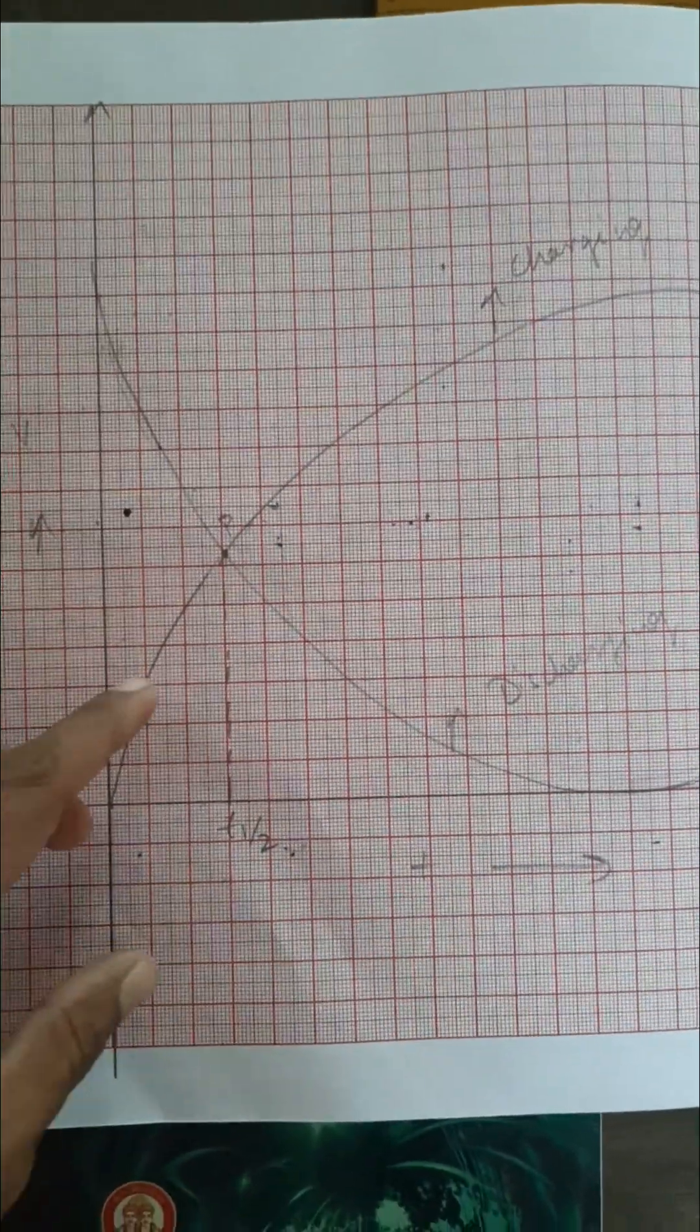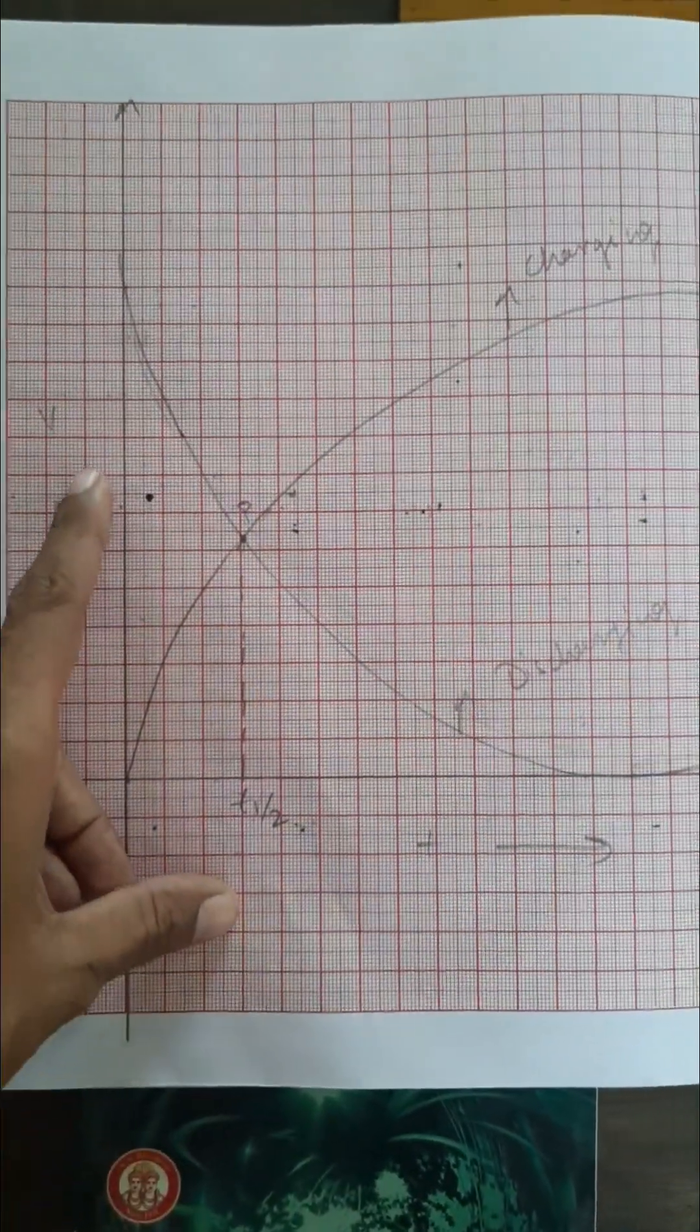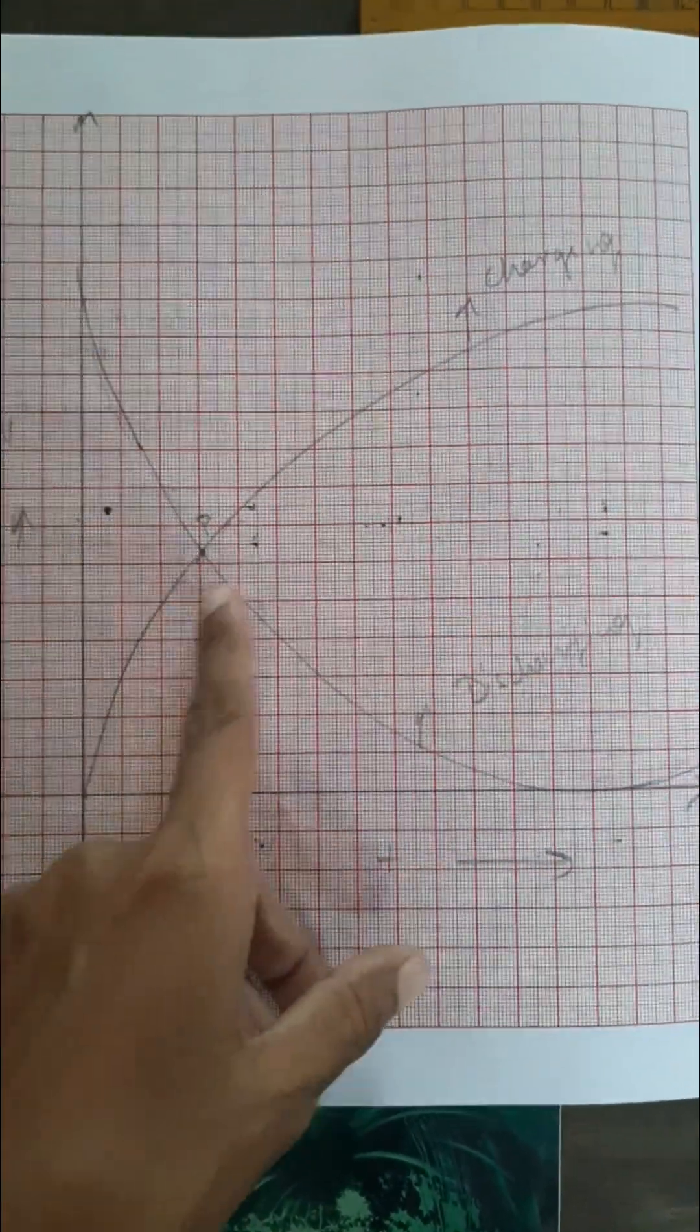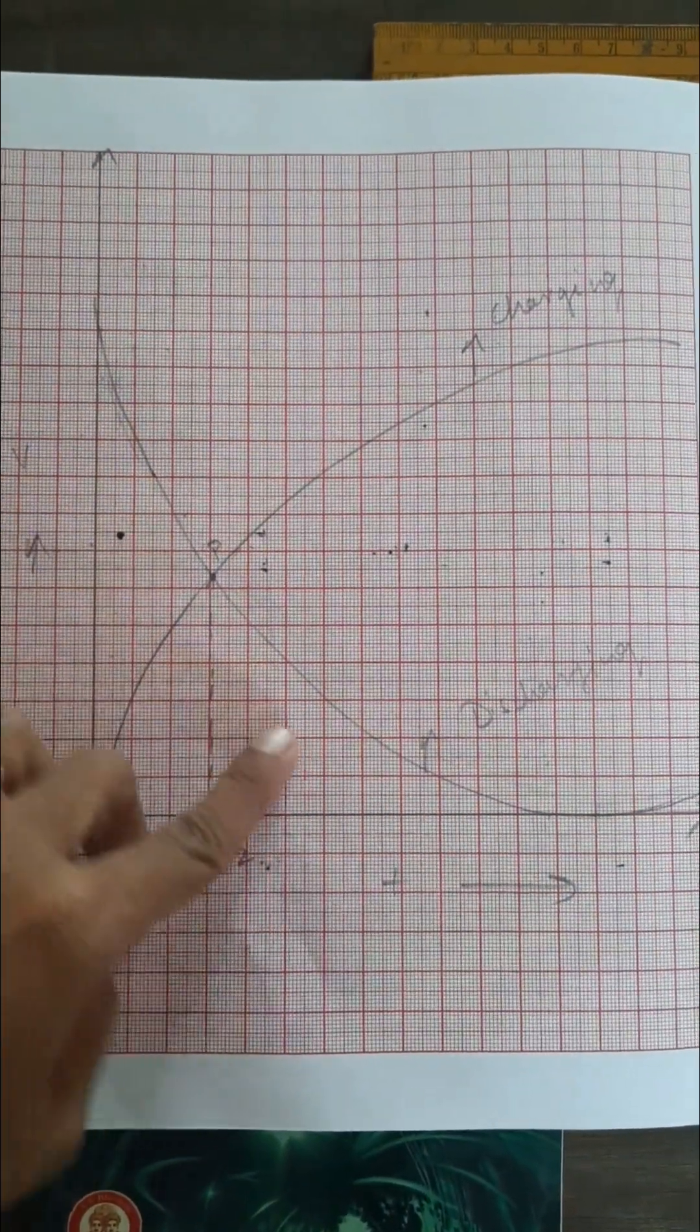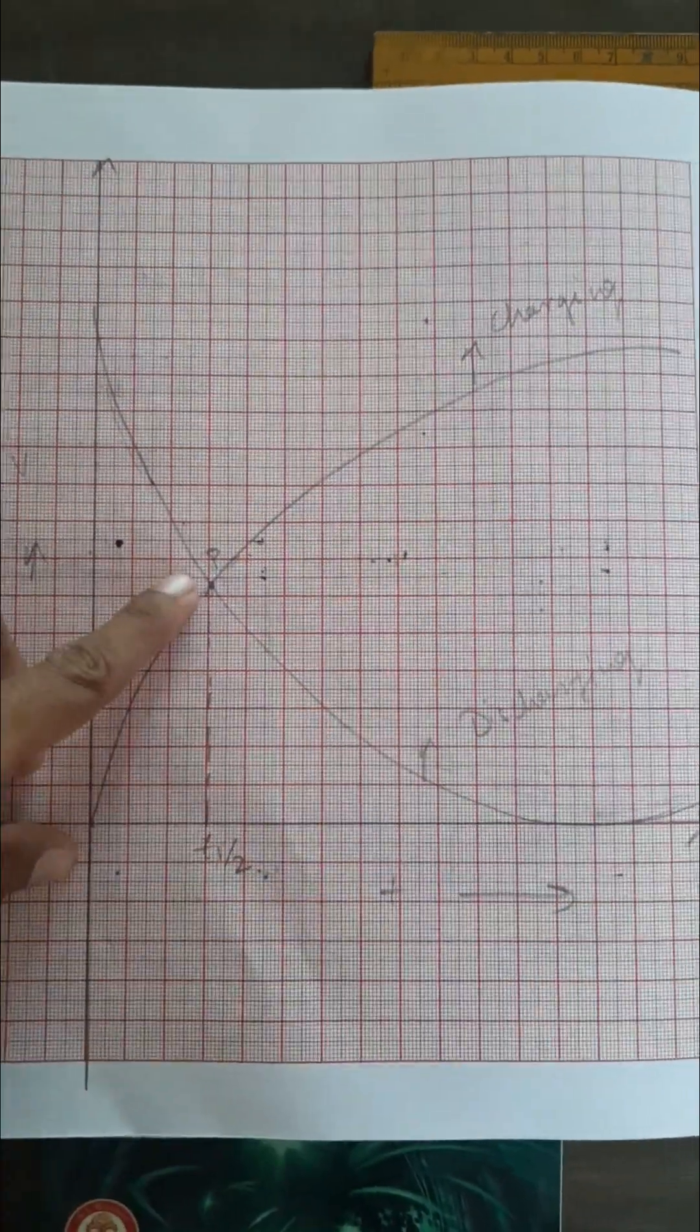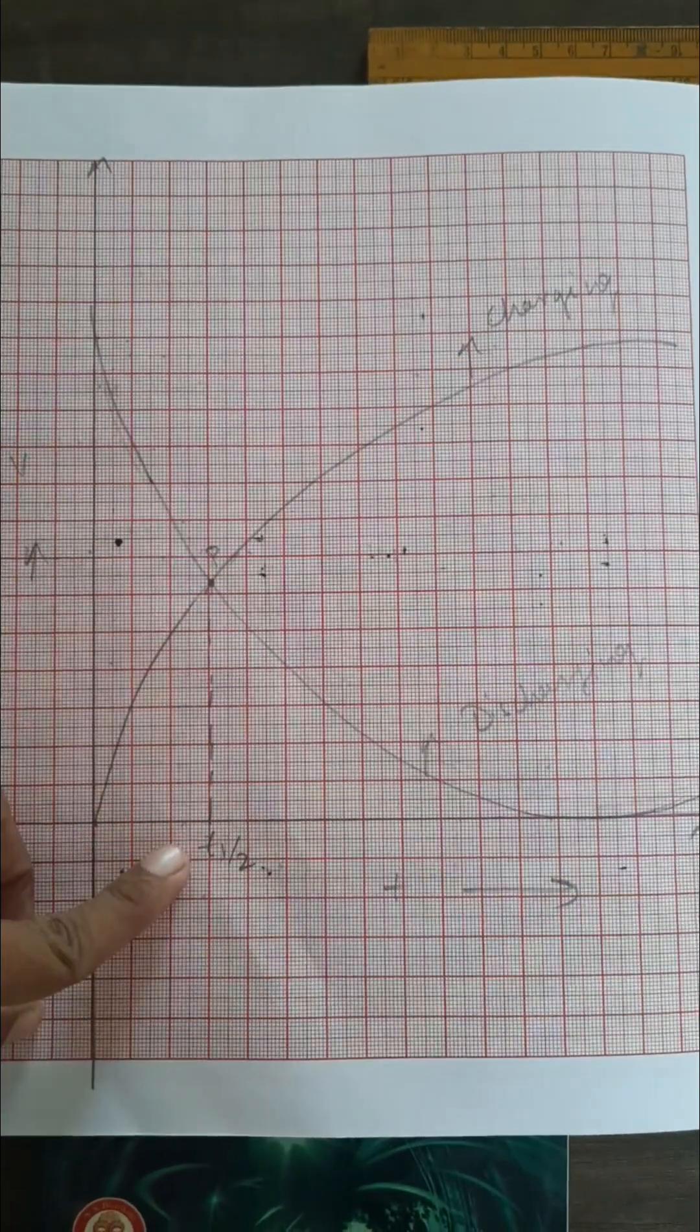To calculate the dielectric constant, you must plot the graph of voltage versus time. For charging, it is increasing, and for discharging, the voltage is going to decrease with respect to time. This is the point where charging and discharging voltage become equal, which we call t-half.